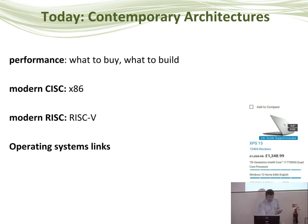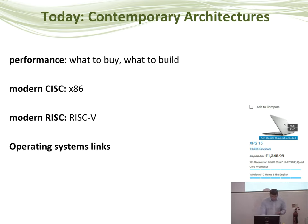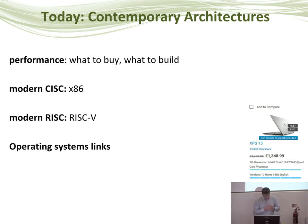In many cases that CPU is going to be a member of a family called x86 — CPUs made by Intel and AMD and occasionally others. These are examples of CISC architectures, which we'll talk about in the first half of the lecture. In the second half we'll talk about RISC architectures, which tend to show up more on mobile devices, and we'll look at a particular flavour of RISC called RISC-V.